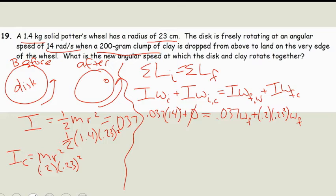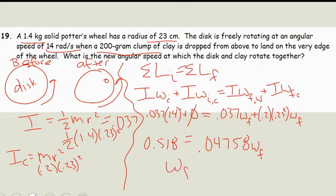When we add that together, we have 0.23 squared times 0.2, then add 0.037 to that. I end up getting 0.0475 times omega final equals 0.518. So my omega final is equal to 10.89 radians per second.